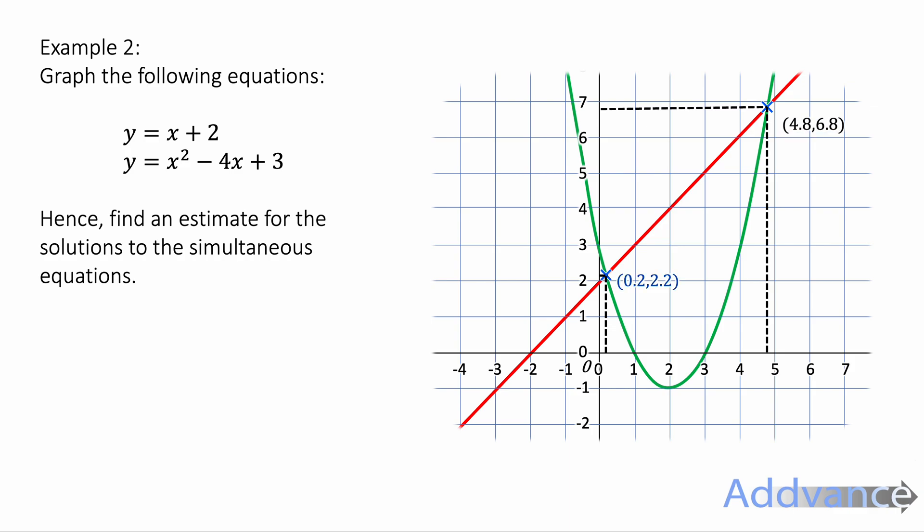Now the other coordinate is about 4.8 and 6.8. And again, there is some flexibility there in the exam. If you put 4.9 instead of 4.8, you would still probably get the mark. So 0.2 and 2.2 give us that the x coordinate is 0.2 and y is 2.2. And the other coordinate is x is 4.8 and y is 6.8. And that's the two separate sets of solutions. We have finished. We have found the solutions to the simultaneous equations.